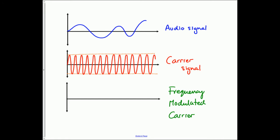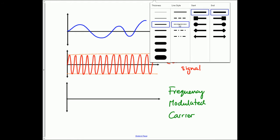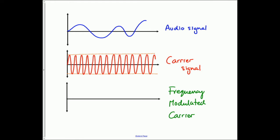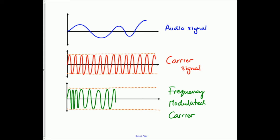Now we're going to try and draw a frequency modulated carrier. We need some construction lines again, and the amplitude of my FM carrier should remain constant, so the construction lines help me keep the amplitude constant. I want to draw my carrier but make its frequency increase where the blue line is high and decrease where the blue line is low. Increasing frequency here, then decreasing where it goes low, increasing again, and decreasing and increasing. That's how to draw a frequency modulated carrier — the amplitude stays the same but the frequency gets higher where the blue line is high.